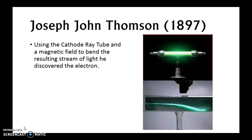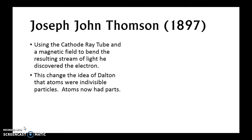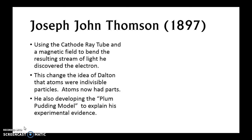Here's what a cathode ray tube looks like when a magnet is used to change the light stream. One pole of the magnet pushes the negative particles away; if you flipped it, it would bend the negative particles toward it because it would be positive. This changed the idea of Dalton's atoms, because atoms now had parts — so atoms were no longer indivisible.